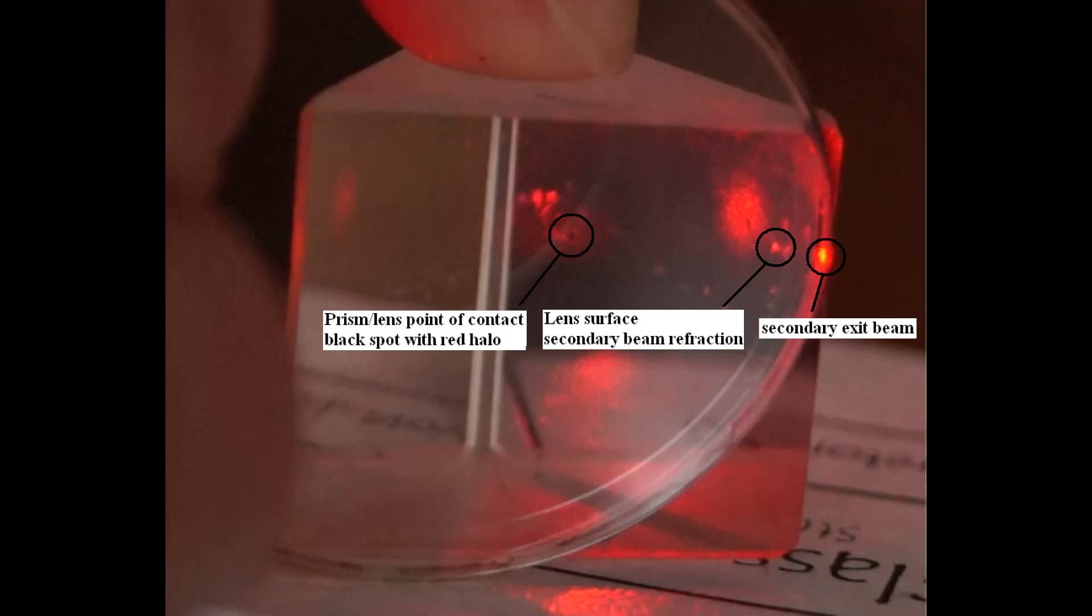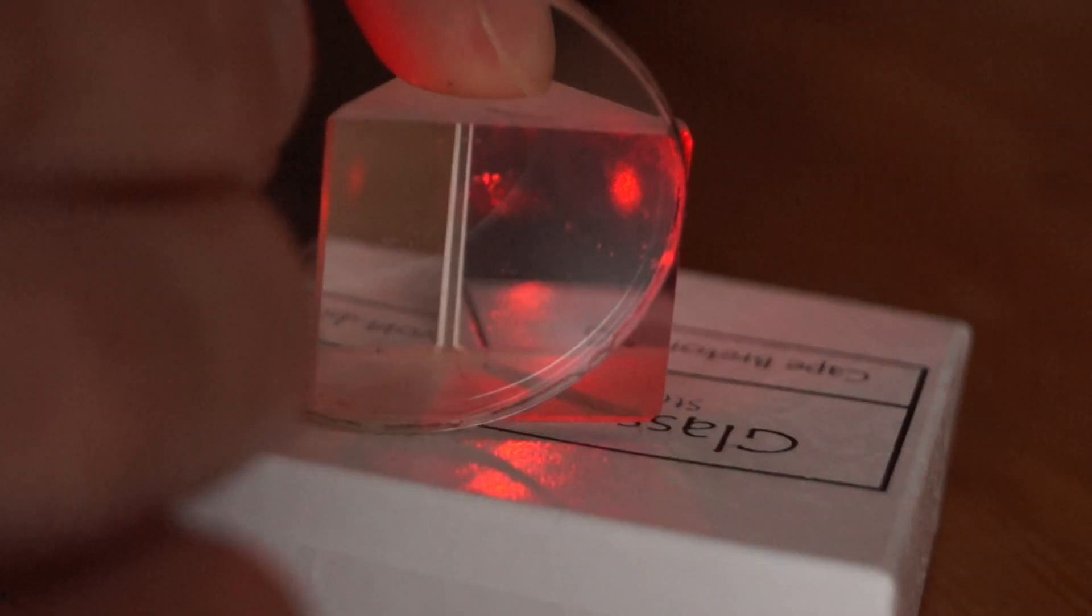If you look carefully near the center of the prism, you will see a moving black spot. This is the point of contact between the prism and the curved lens. A red halo surrounds the black spot when it is in the region of the evanescent waves.